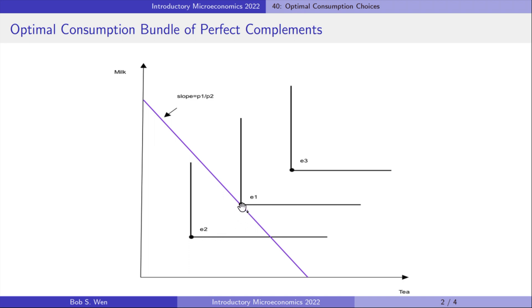The consumer can afford to buy the bundles E1 and E2 but not E3. She prefers E1 to E2 because E1 is on a higher indifference curve and contains more of both goods.